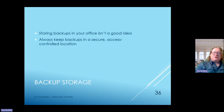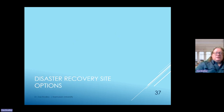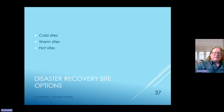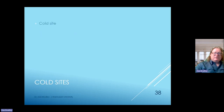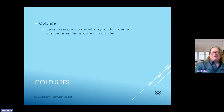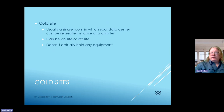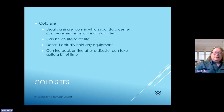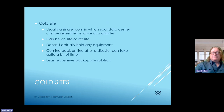Always keep backups in a secure, access-controlled location and also have backups stored at off-site locations. Disaster recovery site options include cold sites, warm sites, and hot sites. Cold sites usually involve a single room in which your data center can be recreated in case of disaster—on-site or off-site—and they don't hold any equipment. Coming back online after a disaster can take considerable time, but cold sites have the advantage of being the least expensive solution.